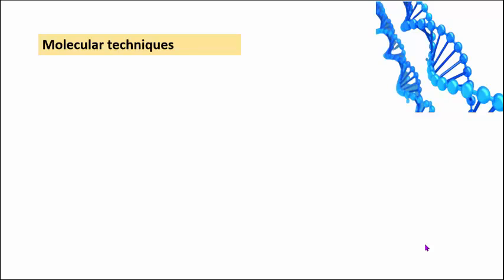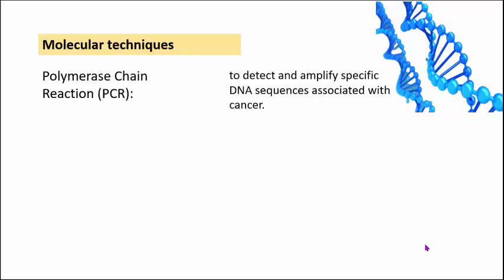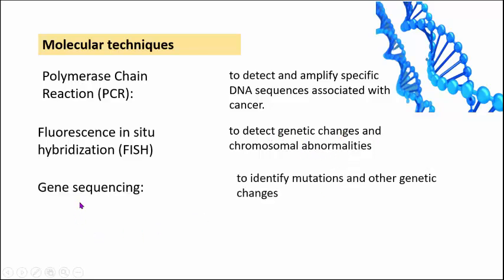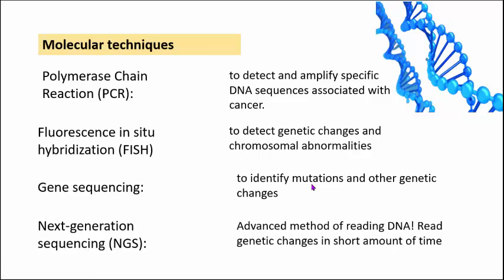The next set of investigations are molecular techniques, which examine the genetic makeup of cancer cells. The first is polymerase chain reaction (PCR), used to detect and amplify specific DNA sequences associated with cancer. The second is fluorescence in situ hybridization (FISH), used to detect genetic changes and chromosomal abnormalities. The third is gene sequencing, used to identify mutations and other genetic changes. Finally, next generation sequencing (NGS) is an advanced method of reading DNA that identifies genetic changes in a very short amount of time.